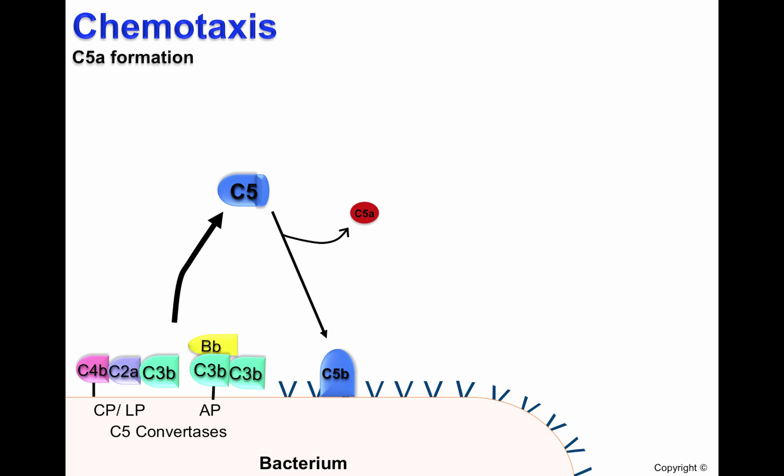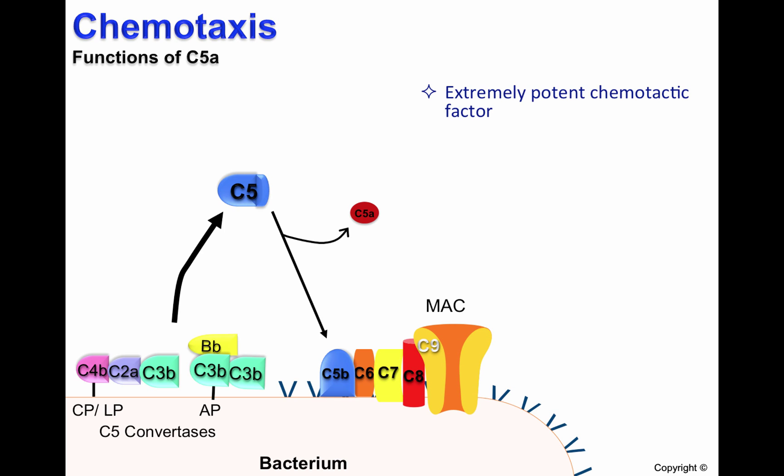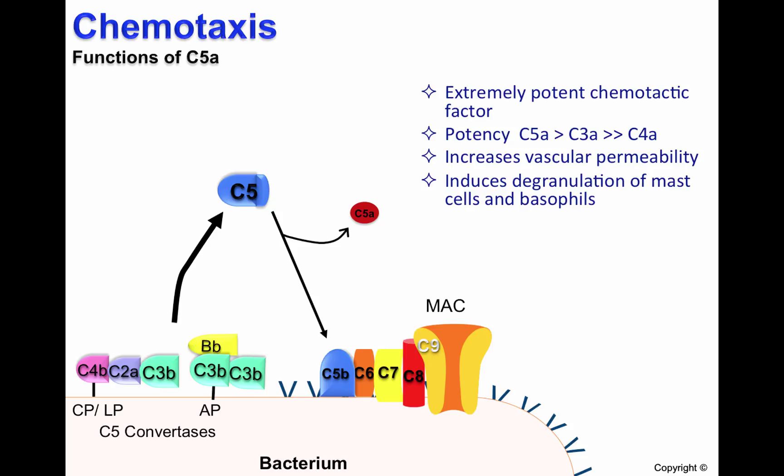C5B will be deposited on the pathogen surface and will participate in the formation of the membrane attack complex. C5A is an extremely potent chemotactic factor — more potent than both C3A and C4A. C5A greatly increases vascular permeability and also induces degranulation of mast cells and basophils.